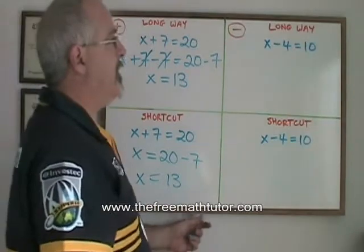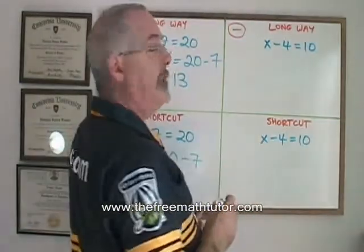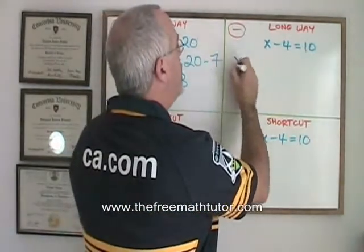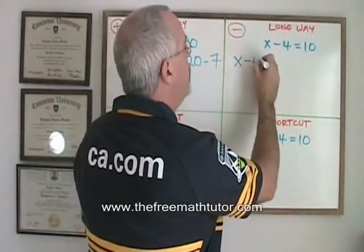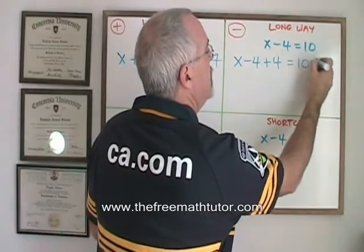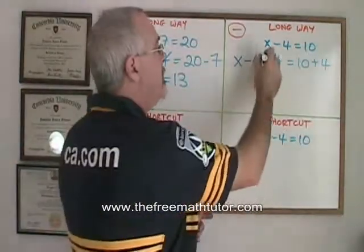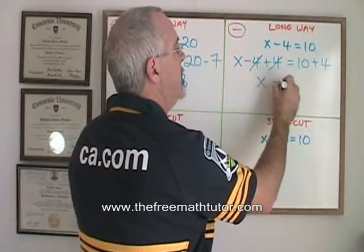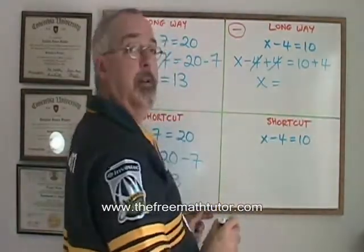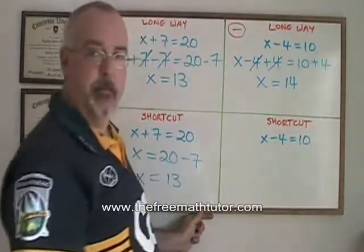With subtraction, it works the same way. The long way, since I am having a 4 subtracted from my x, is to show that I add a 4 on both sides of the equation. The 4s on the left cancel, and that isolates my x. x is equal to 10 plus 4, which is 14. I have my answer.